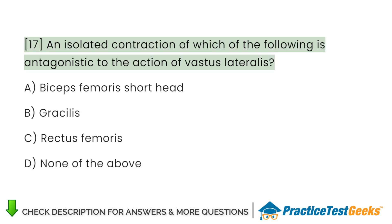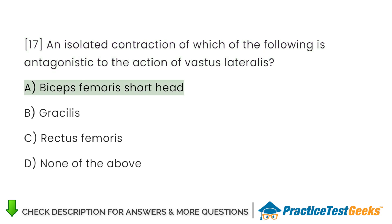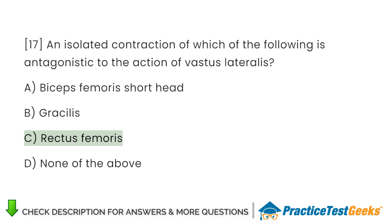An isolated contraction of which of the following is antagonistic to the action of vastus lateralis? A. Biceps femoris short head. B. Gracilis. C. Rectus femoris. D. None of the above.